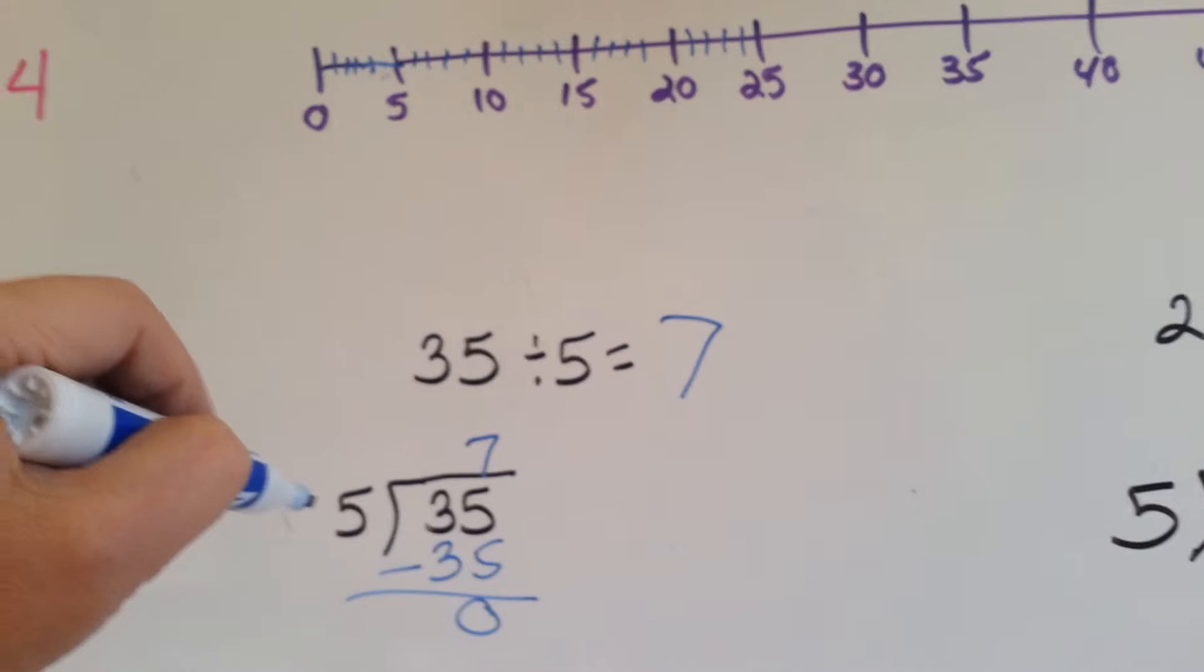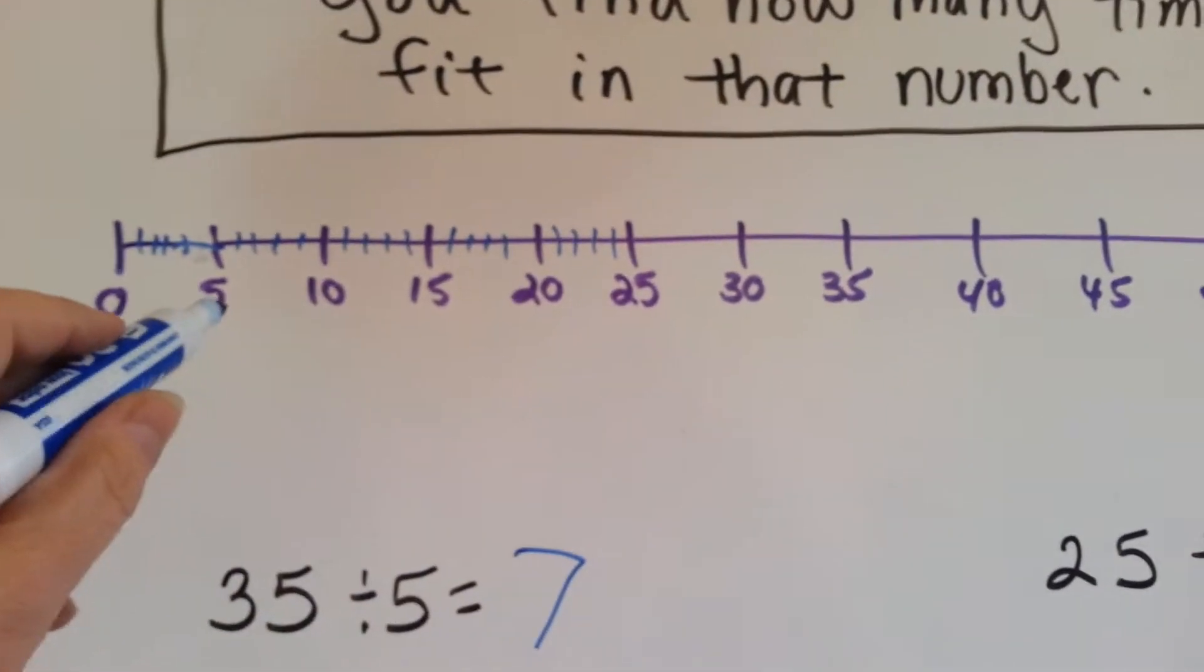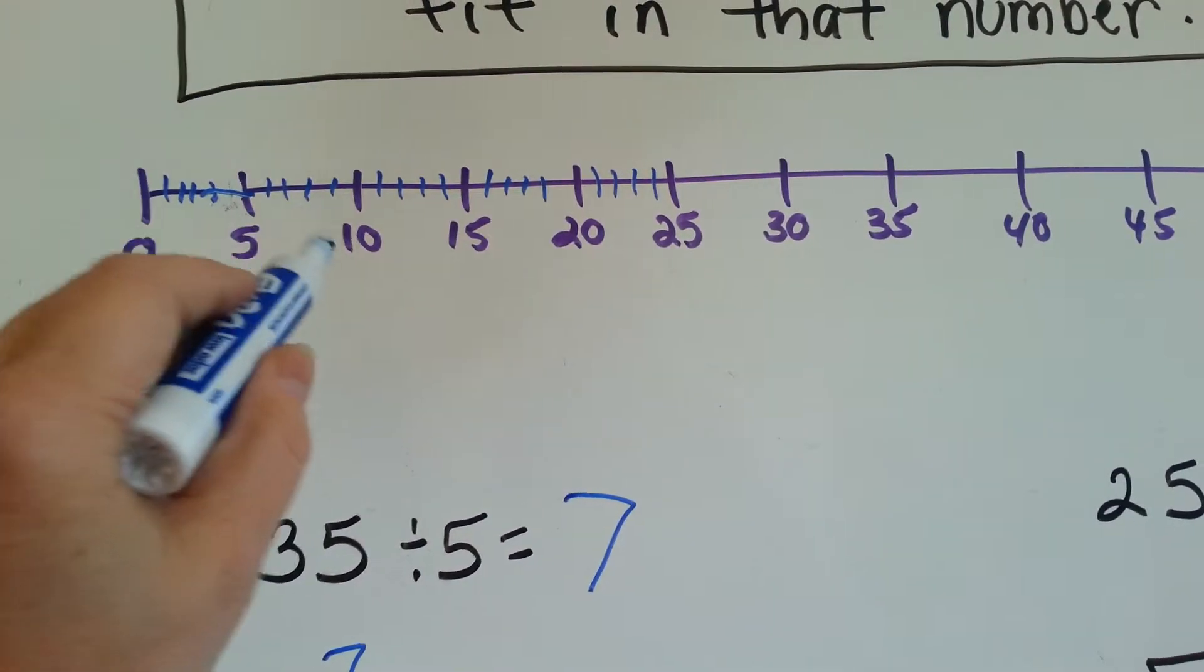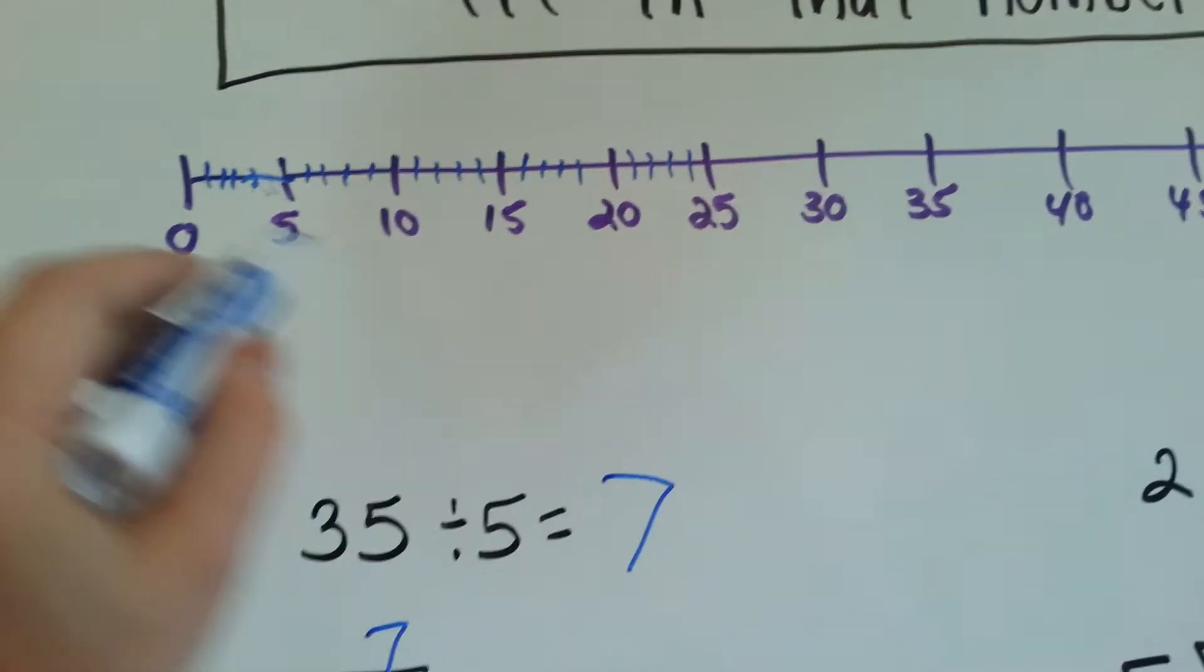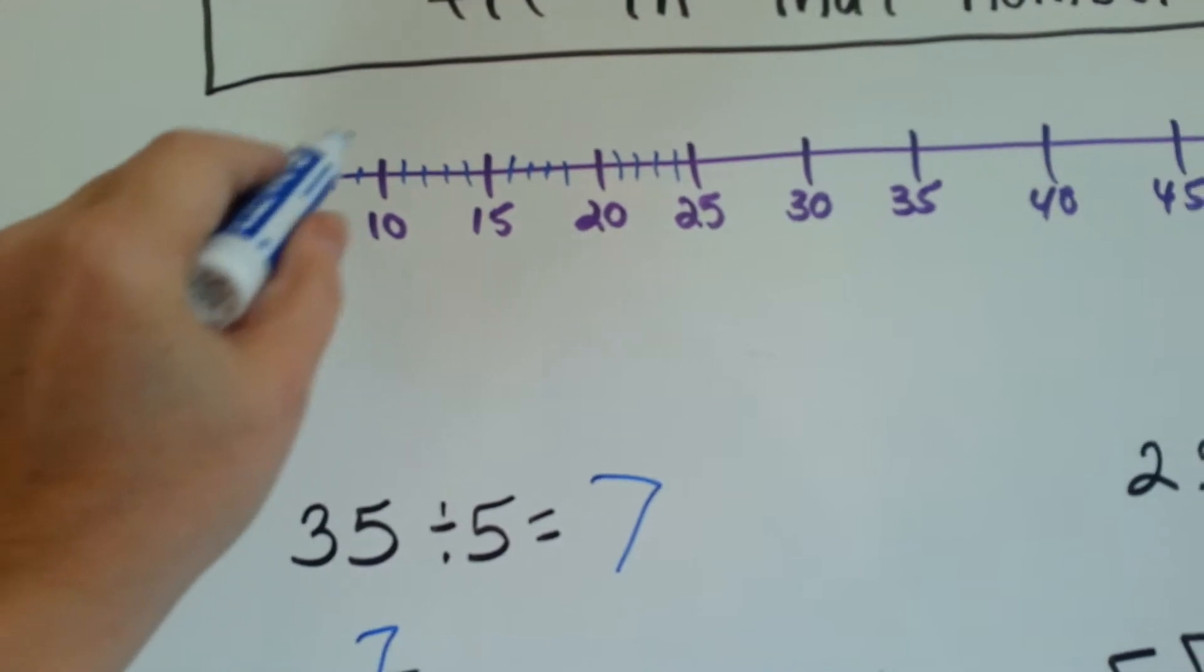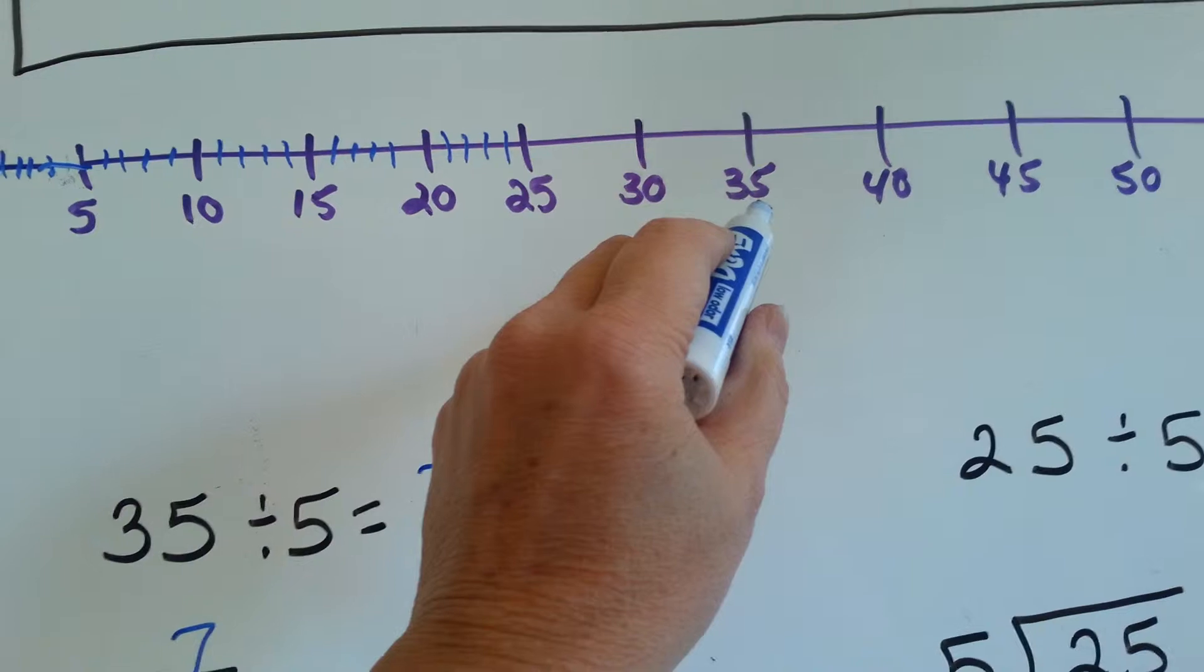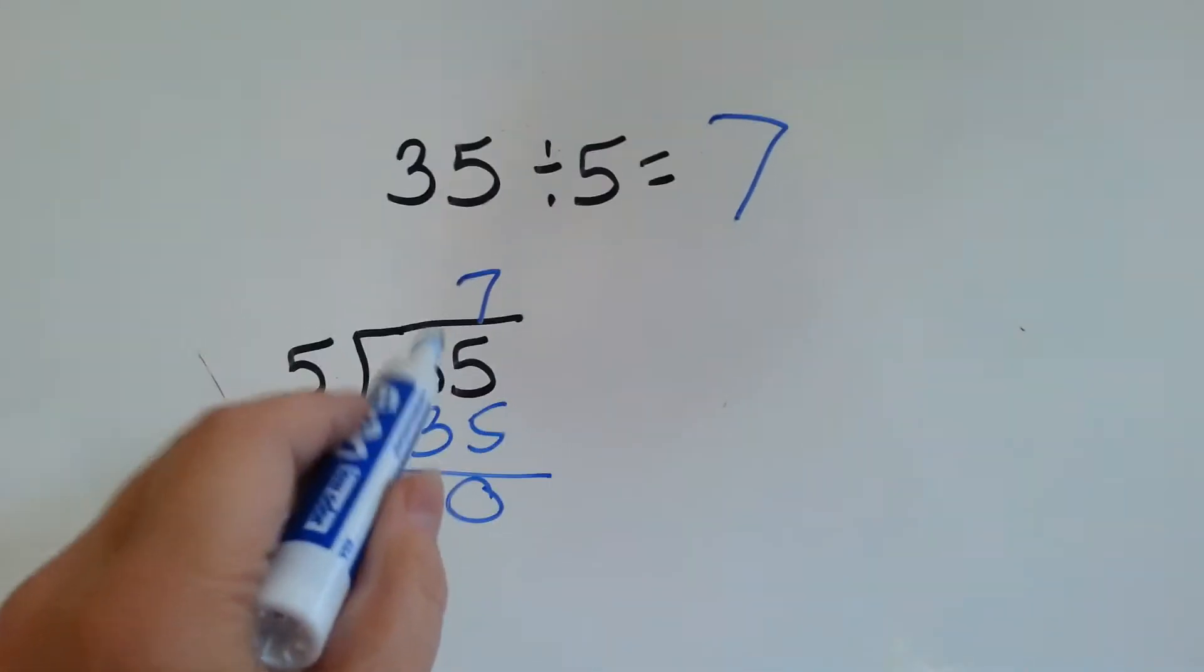If we did it here, how many times can 5 fit into 35? Let's skip count to 35. Because these are each 5's in between here. 1, 2, 3, 4, 5, 6, 7. And we're at the 35. See that? 7.